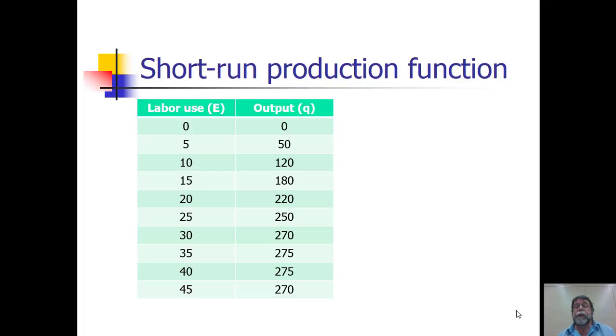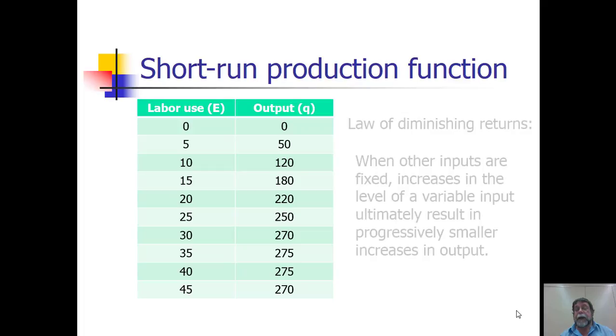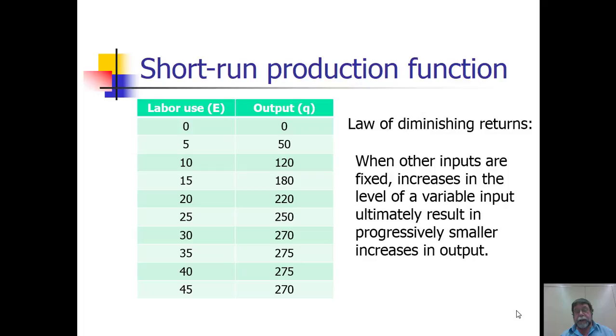One of the things we note here is that initially, as we add new workers, output goes up by progressively larger amounts. For example, the first five workers caused output to go up by 50, the next five caused it to go up by 70. But beyond that point, output starts increasing by progressively smaller amounts. This is an example of the law of diminishing returns, which states that when other inputs are fixed, increases in the level of a variable input ultimately result in progressively smaller increases in output.